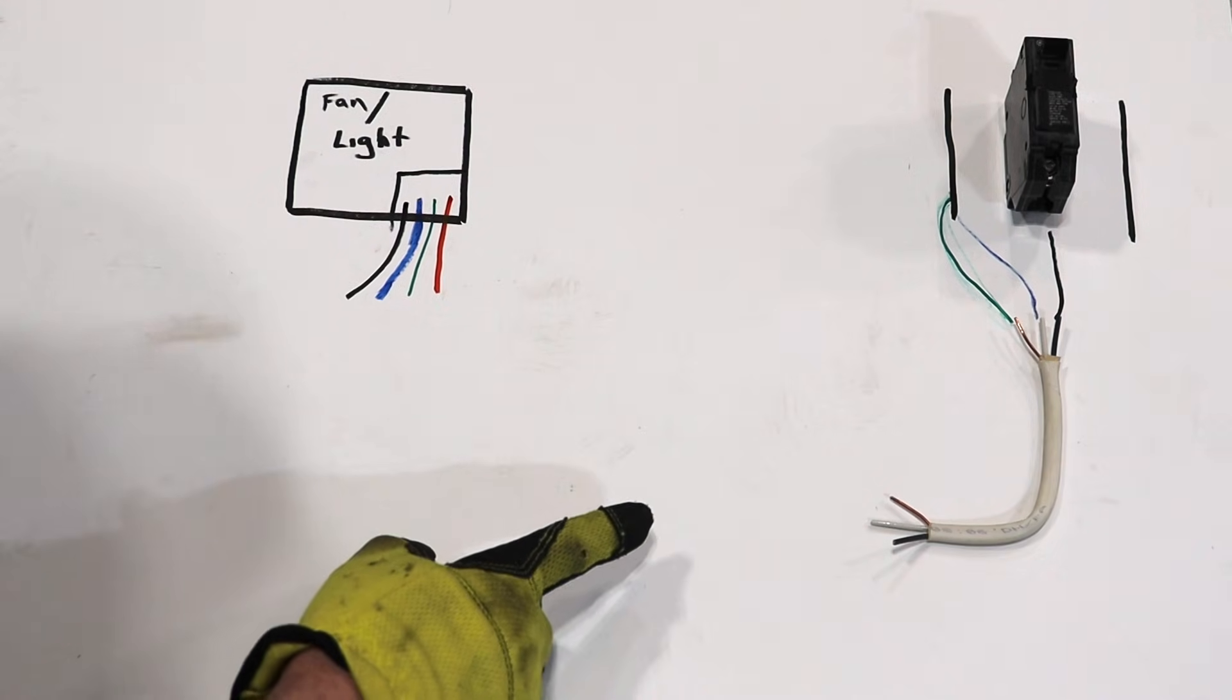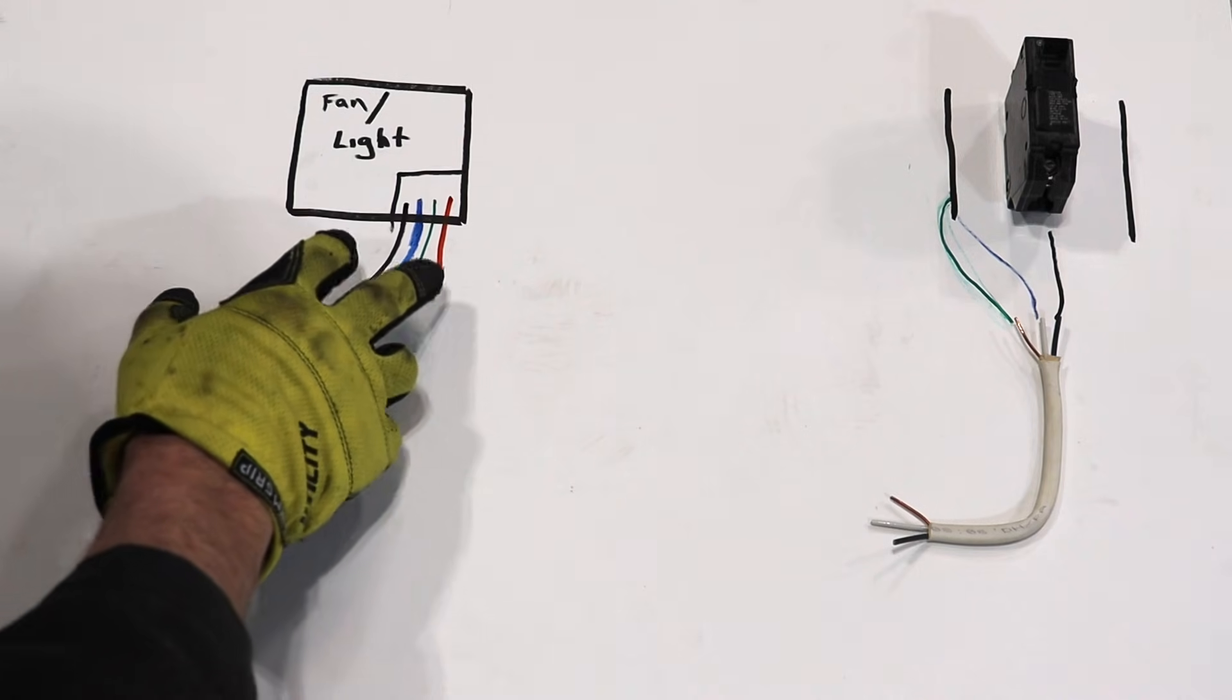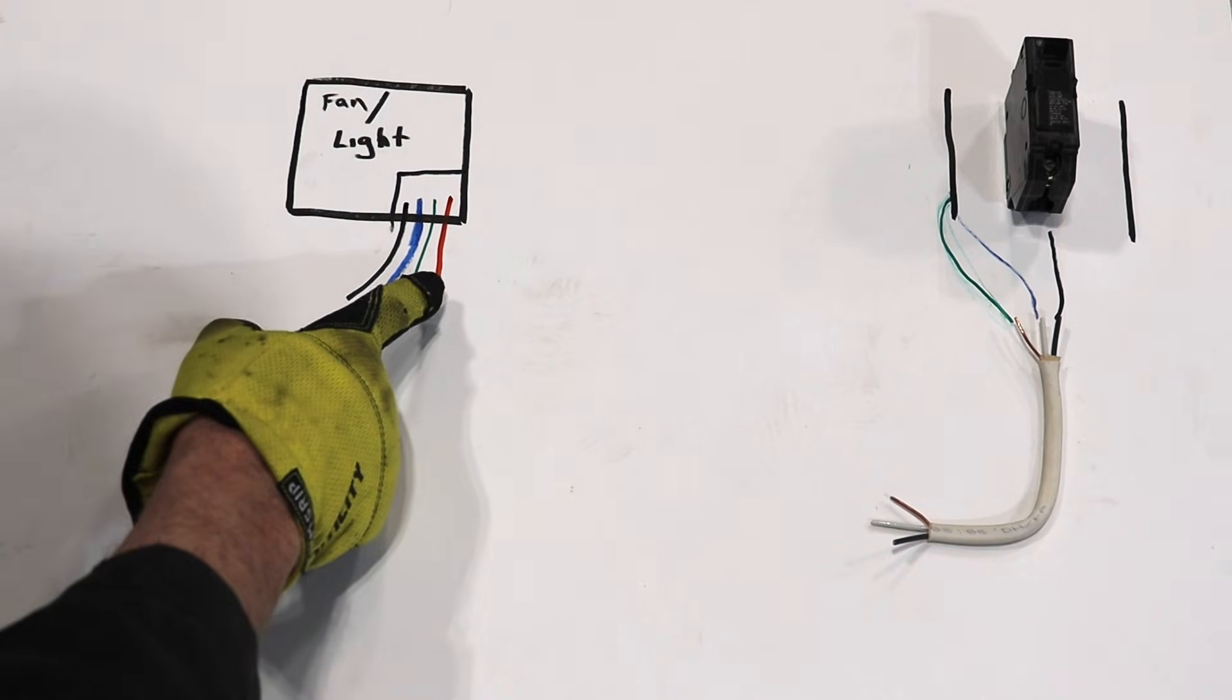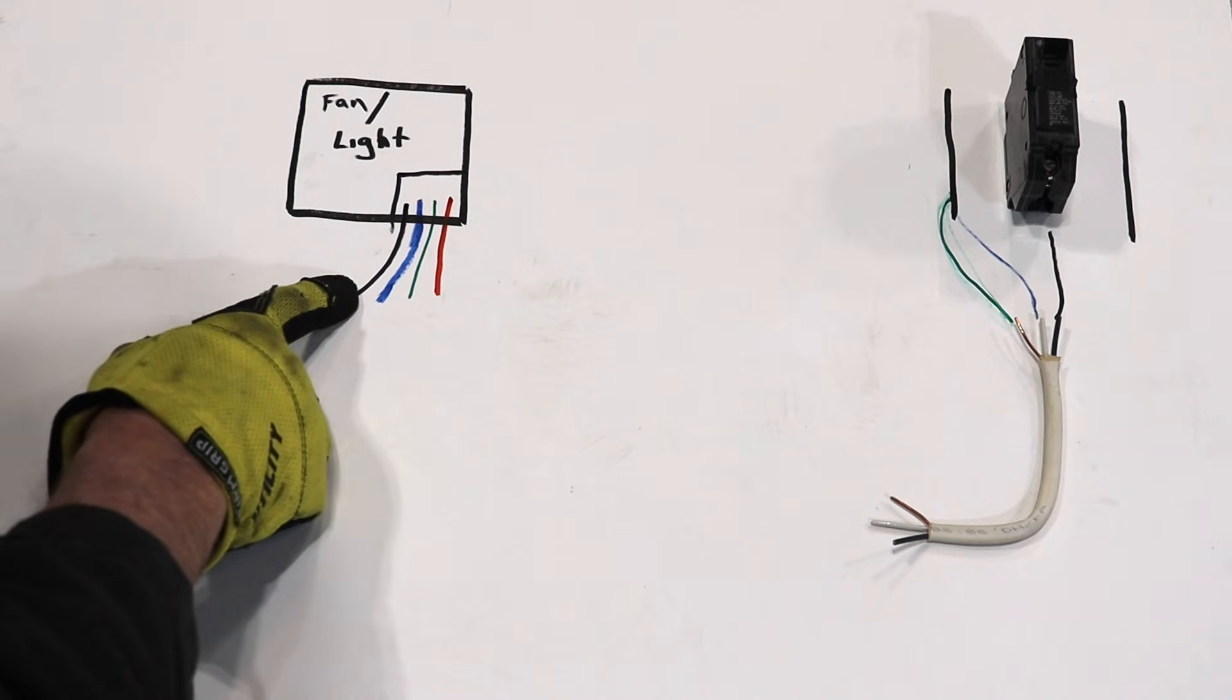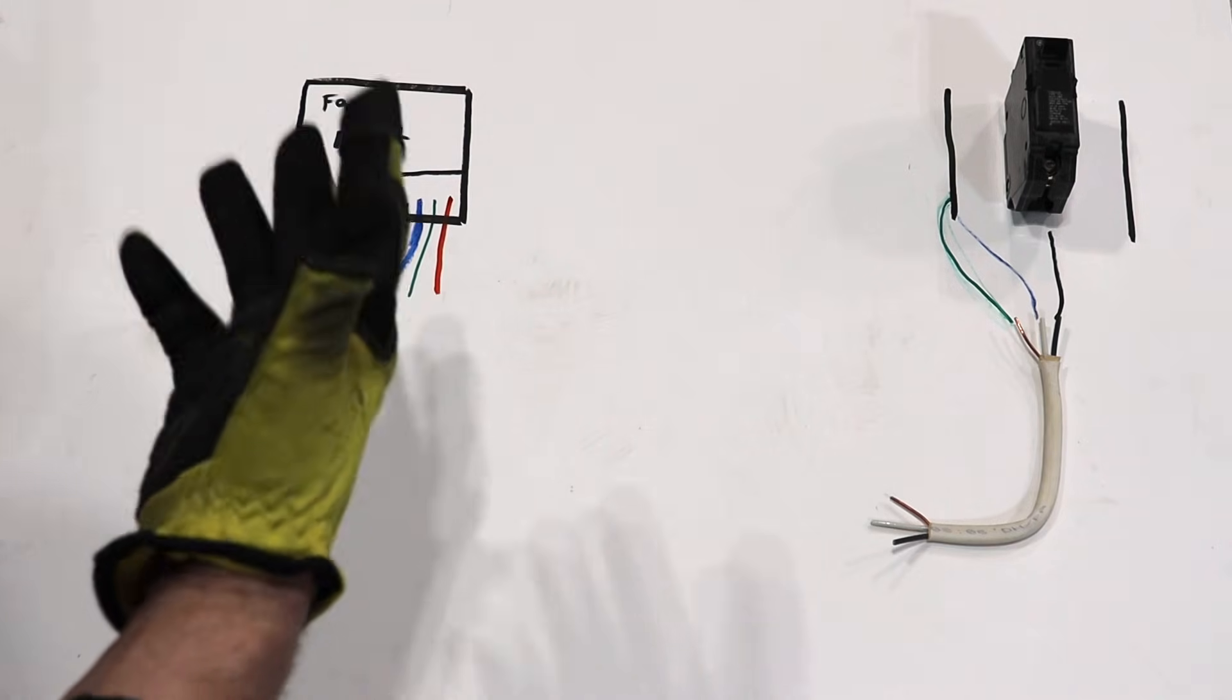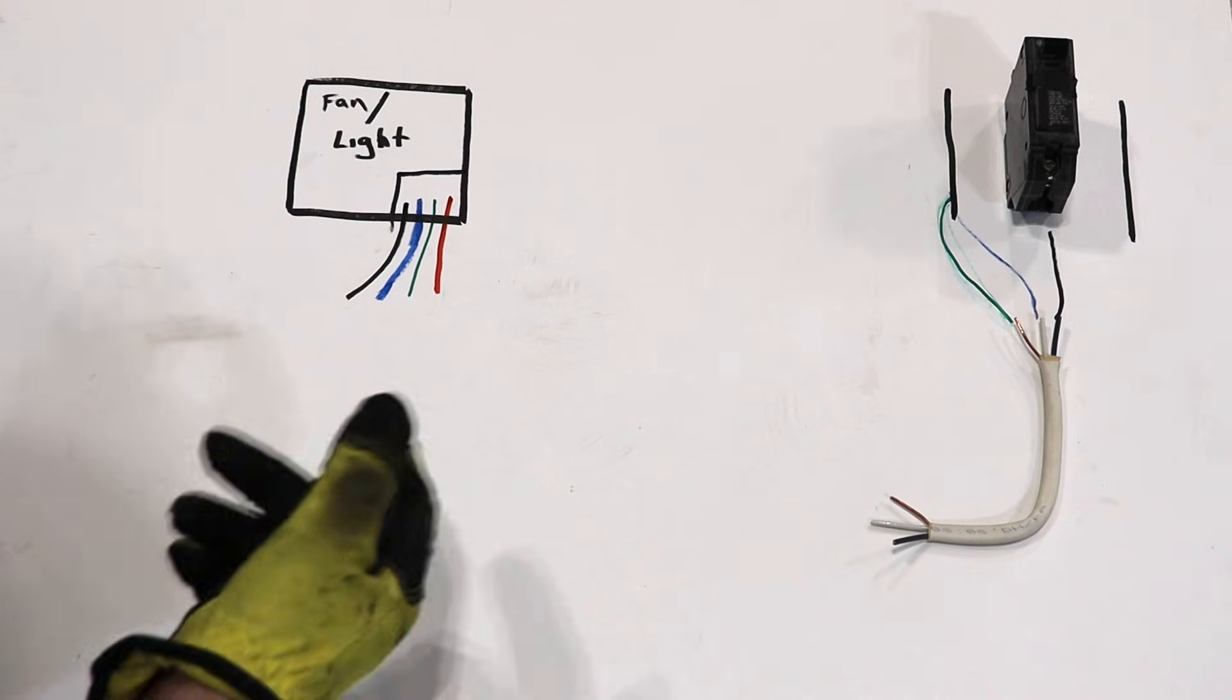You can either have one switch that when you turn on the power it powers both the fan and the light together or you can use two switches to where one switch will control the red wire, one switch will control the black wire. So if you've seen this in a house maybe your house has this you actually have two switches you walk in you can flip the first switch on the light comes on. If you need the fan on then you can flip on the other switch.